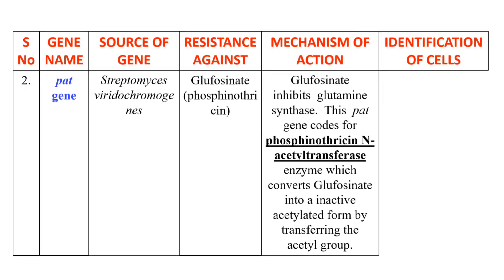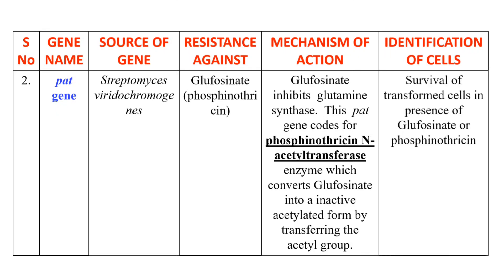The PAT gene encodes the enzyme phosphinothricin acetyltransferase, which converts glufosinate into an inactive acetylated form. For identification, transformed cells — the cells which contain this gene — will survive in the presence of glufosinate or phosphinothricin.